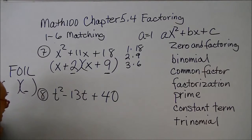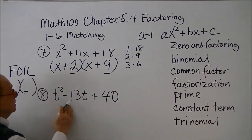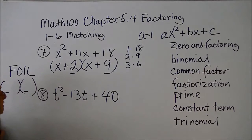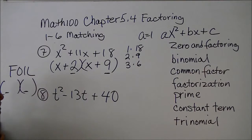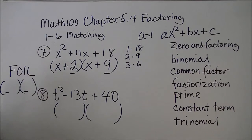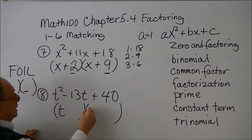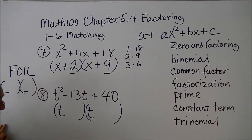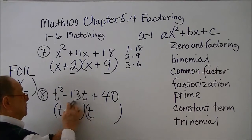Looking at example 8, it's in standard form of the quadratic expression — descending powers of t. There's no common factor to factor out, so the next step is to put two sets of parentheses and reverse the FOIL. What do I put here to get t² in the first position? If you said t, that's correct. Now we're thinking of factors of 40 whose sum will give us a negative 13 for the middle term.